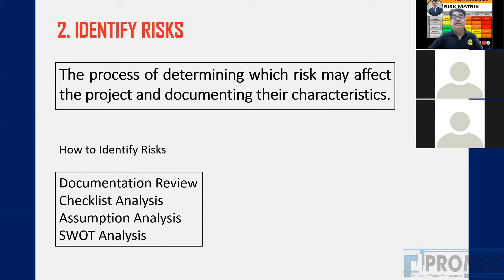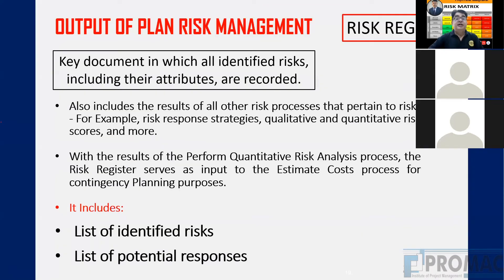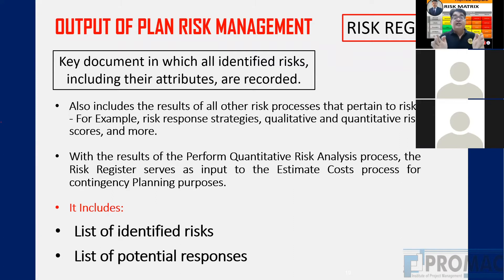So this was the second process — documentation review, checklist analysis, assumption analysis, and SWOT analysis. The output is the risk register. Every project should have a risk register. PMI says every project must have one — a long list of identified risks with their attributes: risk name, category, risk response owner, and response strategy. All these risk attributes are recorded.